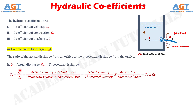Now, this actual discharge Q is again equal to the product of actual velocity and actual area. And this theoretical discharge QTH is again equal to the product of theoretical velocity and theoretical area. This equation can also be written as actual velocity divided by theoretical velocity, which is the coefficient of velocity CV as we discussed earlier, multiplied by actual area divided by theoretical area, which is the coefficient of contraction CC as we discussed earlier.